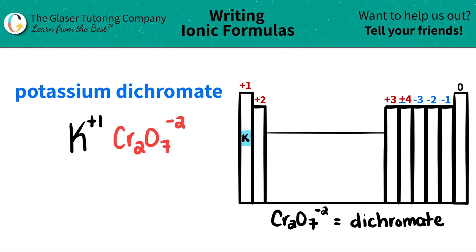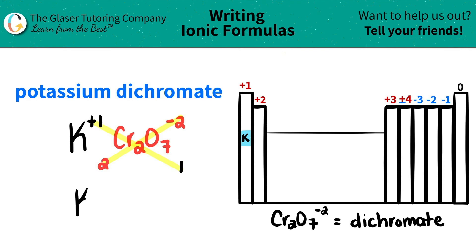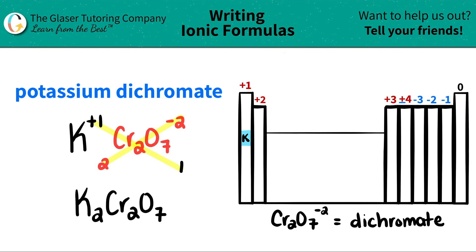Since we have the two components, all we're going to do is take those charges and crisscross them to get the subscripts. This plus one crisscrosses down telling me that I need one of the dichromates, and this negative two crisscrosses down telling me I need two of the potassiums. When you crisscross, don't worry about the positives and negatives — they go bye-bye. You're only focusing on the subscripts, or how many you have. So I have potassium, K, and it's telling me I have two of them, so K2. Since I only have one dichromate, I don't need parentheses — just Cr2O7. You don't have to write the one either.